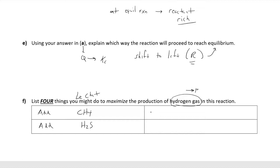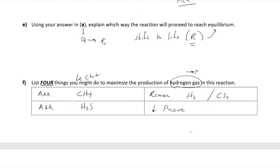We could also remove some of the products — remove some hydrogen gas or some carbon disulfide — and that would help the reaction shift toward products. Finally, we could reduce the pressure, and it will shift to the side with the larger number of moles of gas. We had three reactant moles versus five product moles of gas, so reducing pressure would help it shift. Note: I did not tell you if this reaction is exothermic or endothermic, so you cannot decide which way a temperature change would help or hurt you — be careful about that.